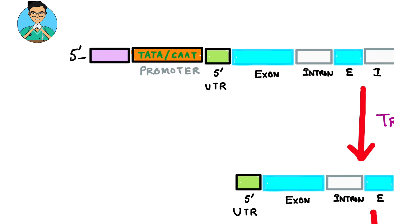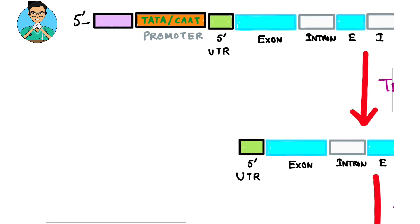Functionally, a promoter is that region where RNA polymerase 2 comes and binds along with other transcription factors. This is how the transcription of the gene begins.